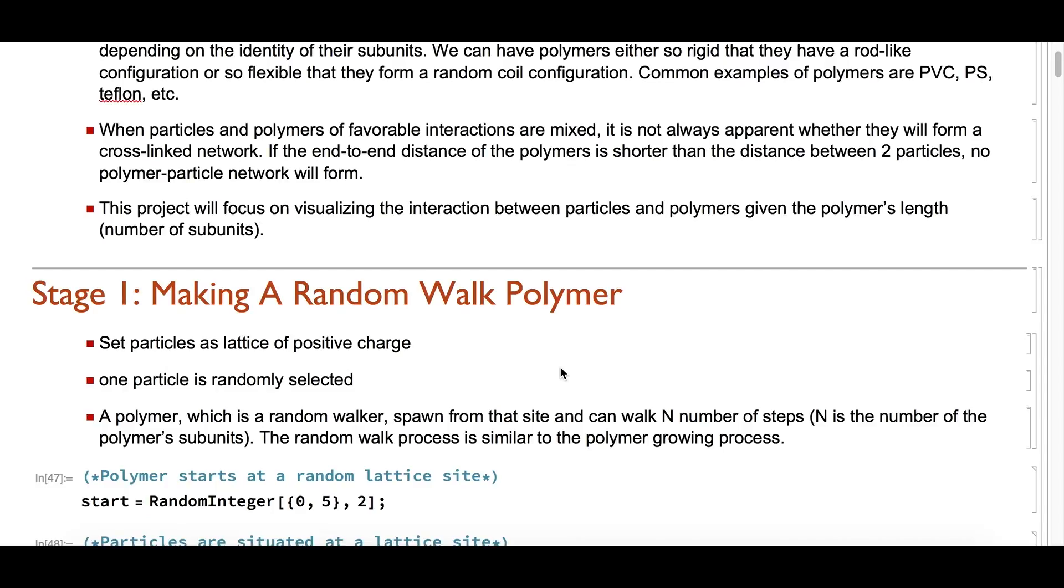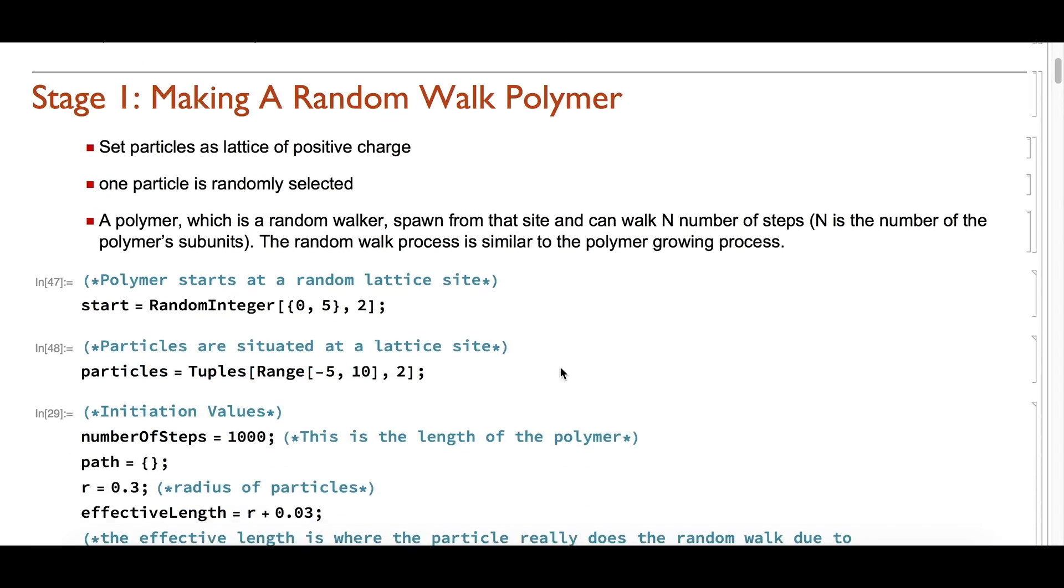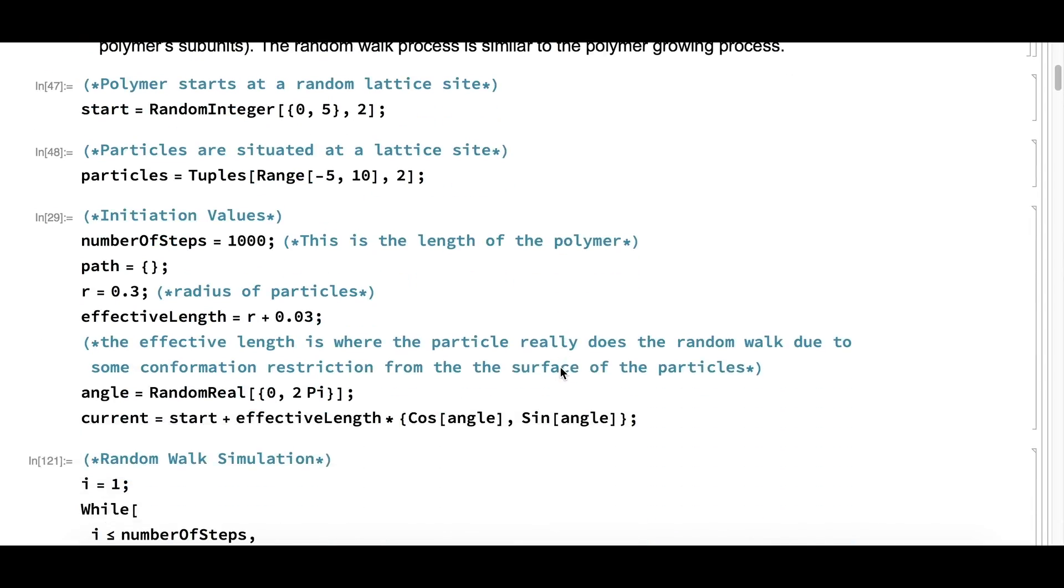In stage 1, we make polymers by using the random walk method. We consider particles as a lattice. Polymers will start from a random lattice site. This initiation part ensures that the polymer will truly random walk at a certain distance away from the surface of the particle.